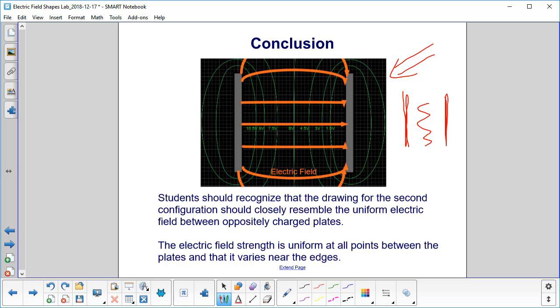The electric field strength is uniform at all points between the plates, but it varies due to edge effects at the edges.